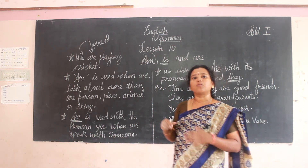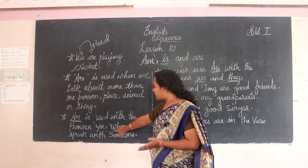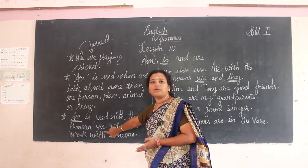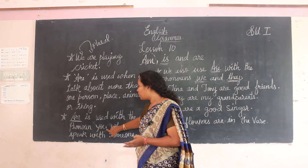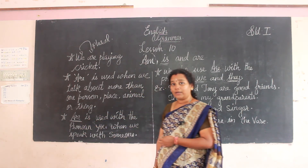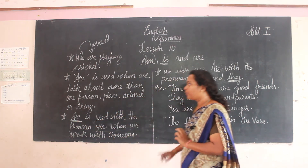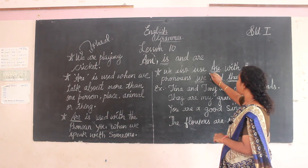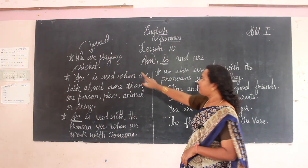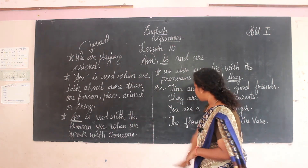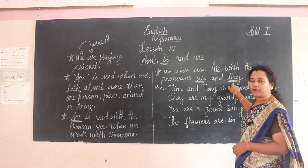'Are' is used when there is more than one person, animal, or thing. The second condition is the pronoun 'you' — you have to add 'are'. The third condition: we also use 'are' with 'we' and 'they'. For example: 'They are my grandparents.'